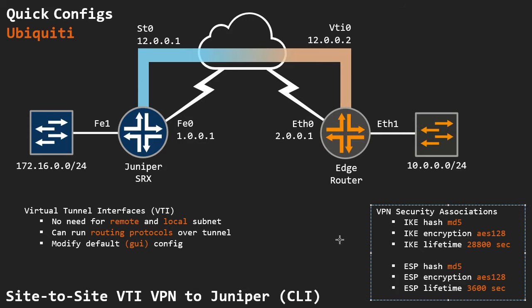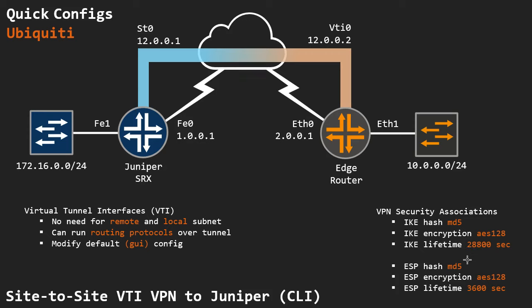I have IKE and ESP hashing and encryption settings here. I go over more detail in my other VTI VPN videos, but basically these are the defaults of the EdgeRouter when you configure it using the GUI. Mainly the lifetime of 2800 for IKE and 3600 for ESP. That's what I'm going to match on the Juniper side. So let's get started on the configuration.